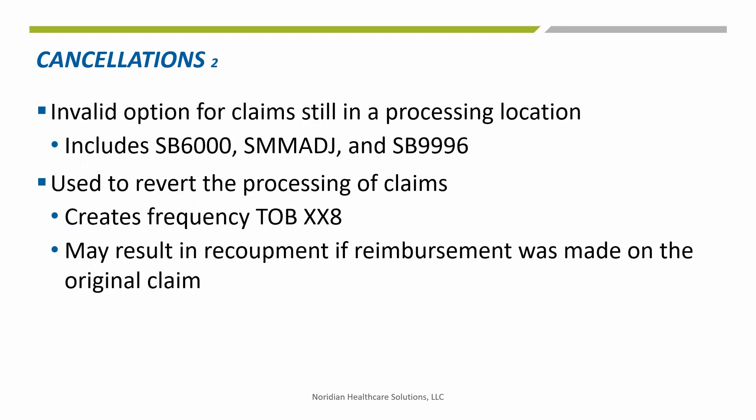Claims that are still in processing will show a different status location other than fully processed. These begin with the letter S and will have a letter or number in the last position that is not the number 97. Claims that show a status location ending in 96 are not finished with the processing cycle, but eventually will be.